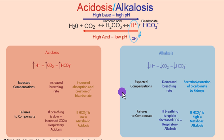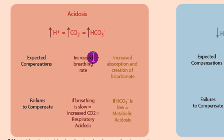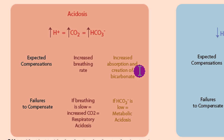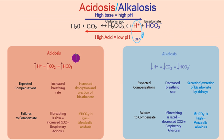Coming back to the main chart: with acidosis, there's too much acid and too much CO2, and we should have plenty of bicarbonate to balance them. We expect compensations: if there's higher CO2, we expect an increased breathing rate; if there's higher bicarbonate, we expect increased absorption and creation of bicarbonate by the kidneys. If someone is breathing slowly when they should be breathing fast due to lots of CO2, that indicates respiratory acidosis. If bicarbonate is low when we want it high — because we have lots of acid and need bicarbonate to buffer it — that indicates metabolic acidosis.